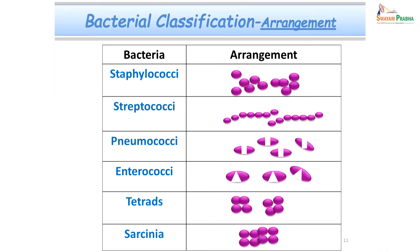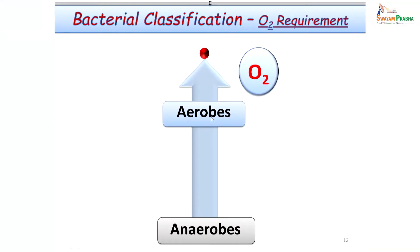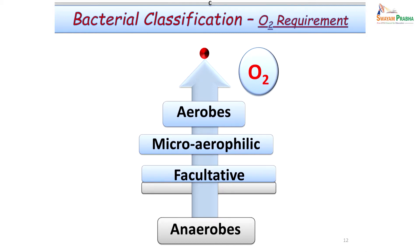Continuing with bacterial classification, bacteria can also be classified based on their arrangement. If arranged in grape-like clusters, they are called staphylococci; if in chains, streptococci; pneumococci are typical lanceolate-shaped diplococci with a capsule. Enterococci have a spectacle appearance. Cocci in groups of four are called tetrads, and in groups of eight are called sarcina. Classification can also be based on oxygen requirement: obligate anaerobes do not require oxygen and are killed if exposed to it; aerobes require oxygen; and in between are microaerophilic and facultative anaerobes, which can tolerate air.